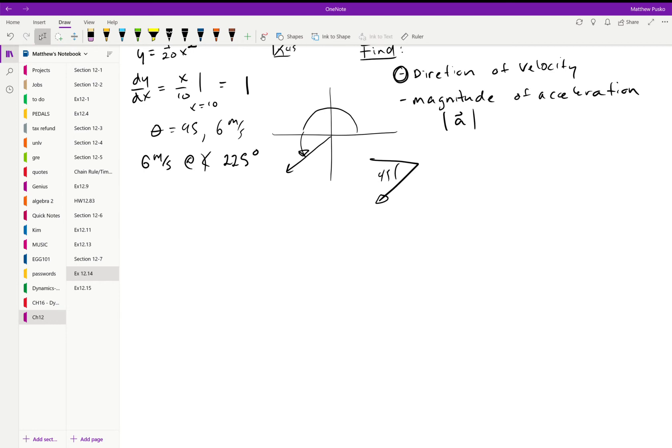Now that we have the velocity, let's look at the acceleration. The acceleration in these components, where we have normal and tangential components, is equal to the linear acceleration in the tangential direction plus v squared over rho in the normal direction. That means we need rho.